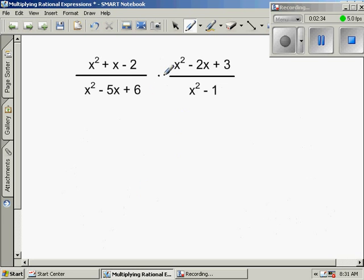All right, when you have a multiplication of rational fractions like this, you need to factor. Remember, you cannot cross off parts, you have to factor. So the top would factor to x plus 2, x minus 1. The bottom, the denominator, factors to x minus 2, x minus 3.